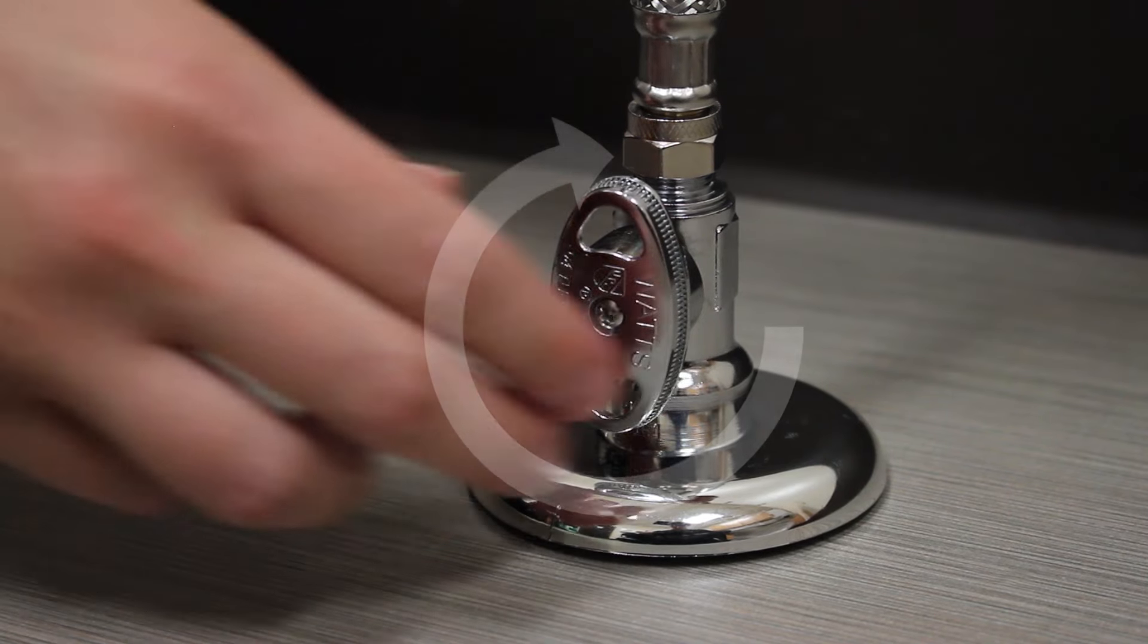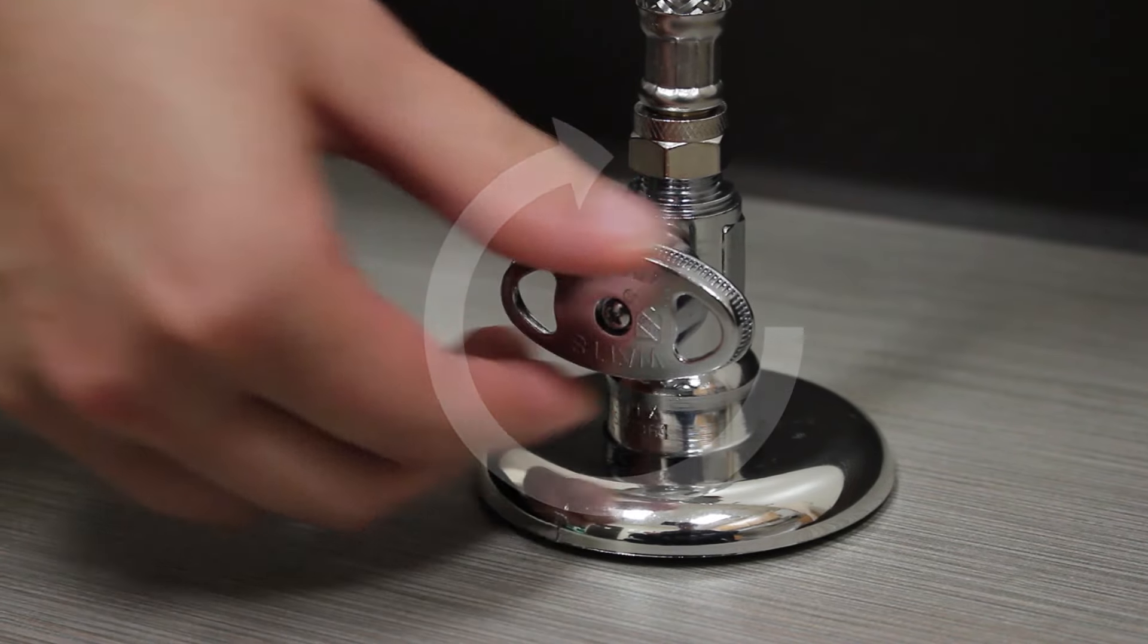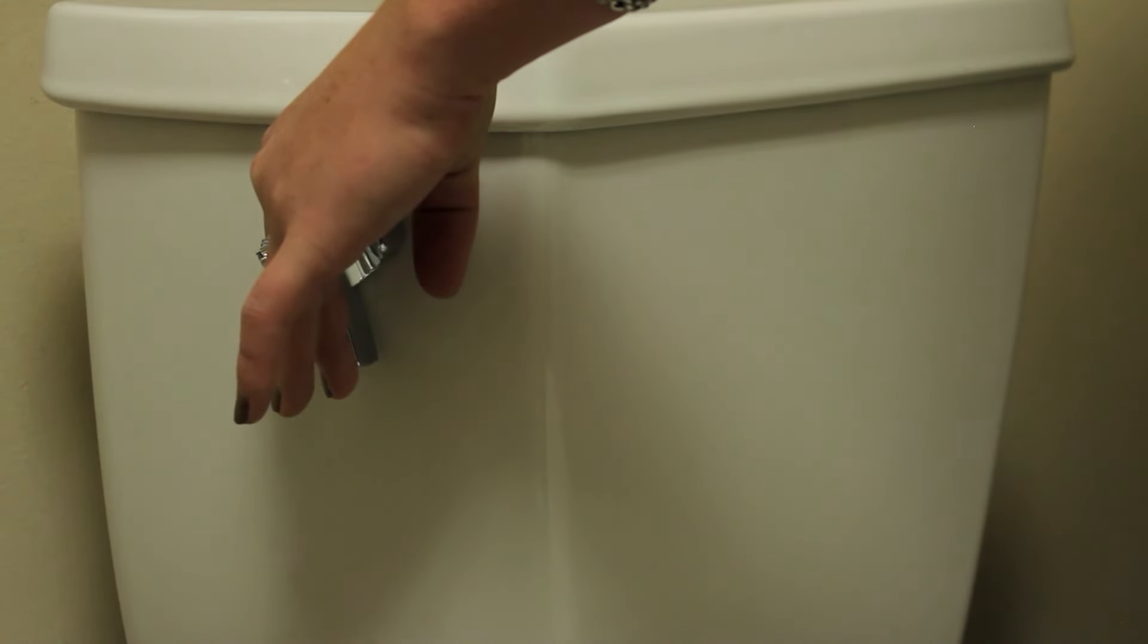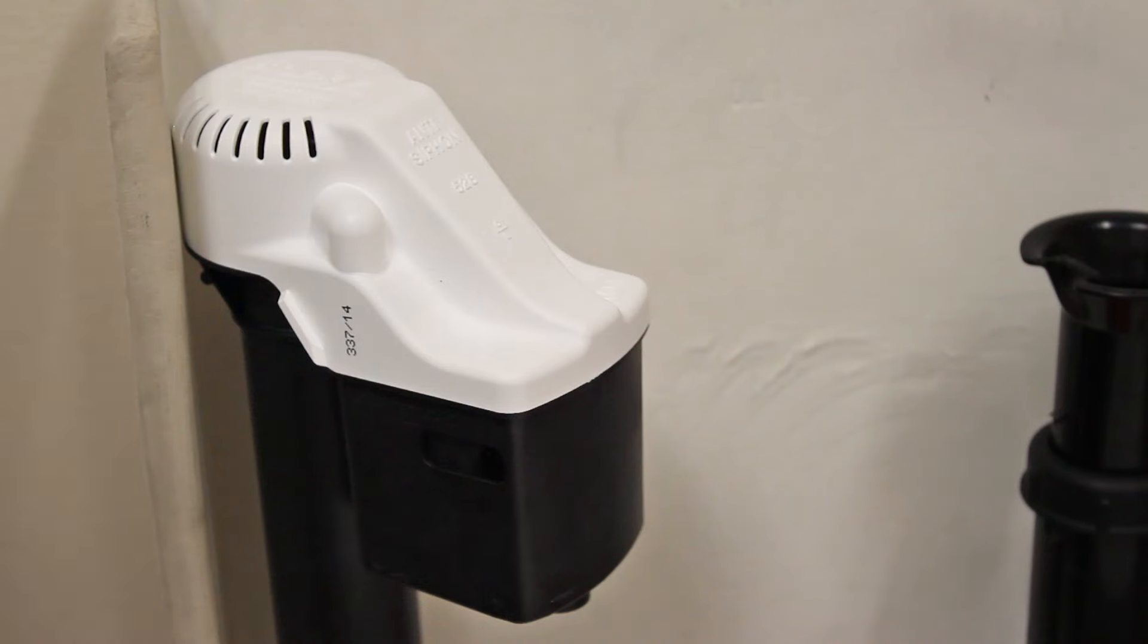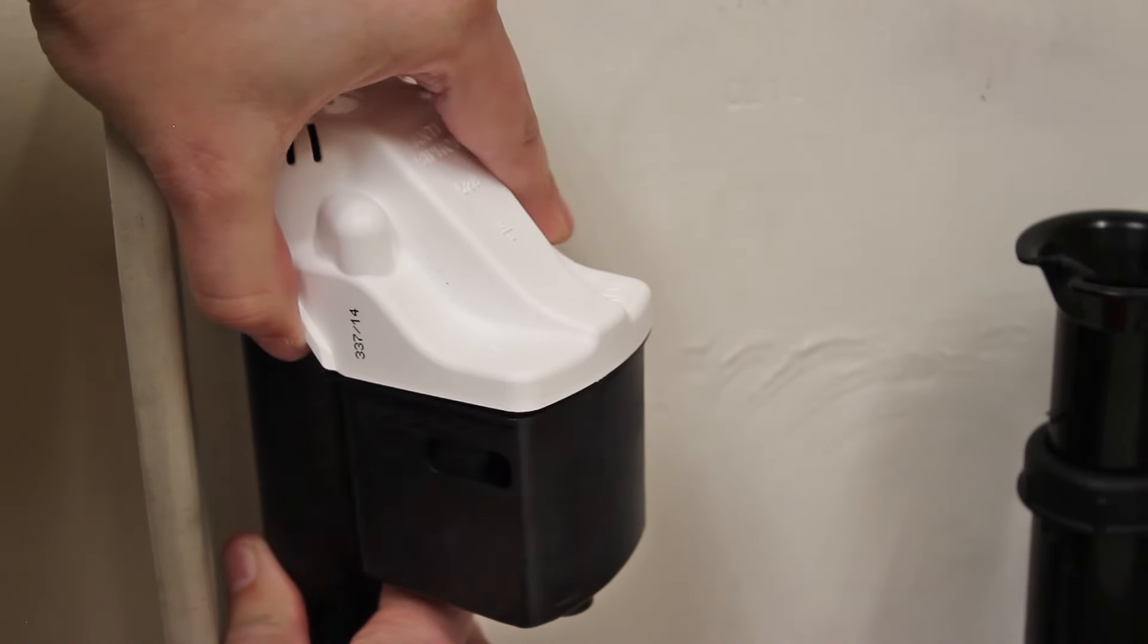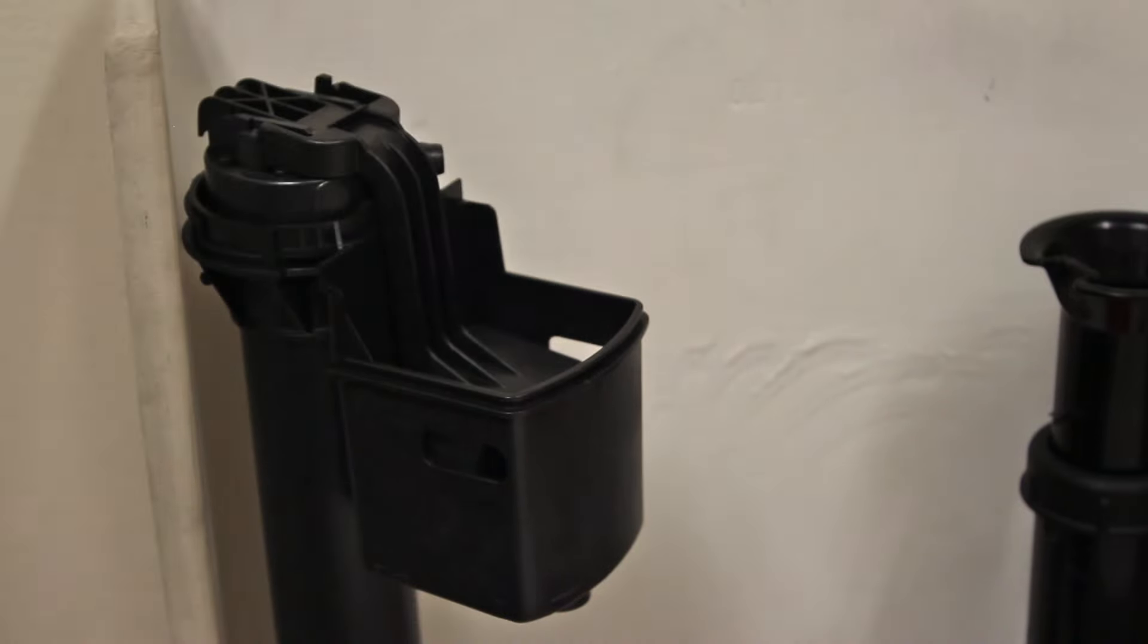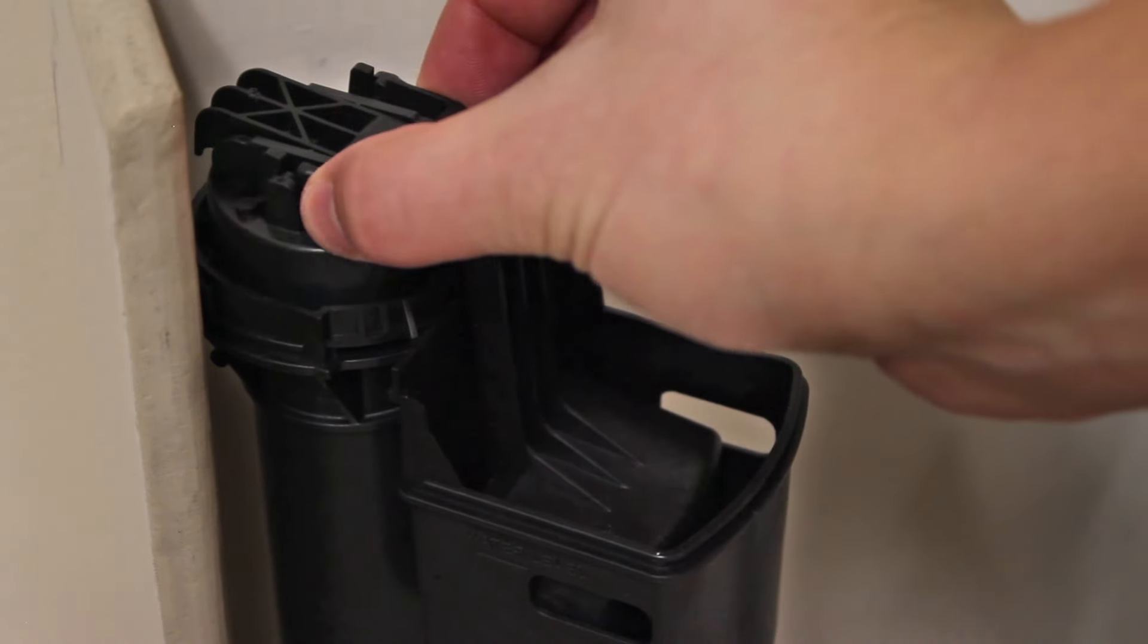If this does not improve water flow, turn the water supply off and flush to empty the tank. Next remove the refill tube, you may need to twist slightly. To remove the valve cover, place your thumb under the tab and lift up. Remove the float by gently pinching the float arms together.